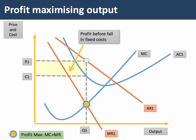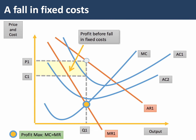Now let's assume there's a fall in the fixed cost of production — for example, a fall in insurance costs or a fall in the cost of renting buildings on an annual leasing basis. Fixed costs fall from AC1 down to AC2. Notice there's no change in marginal cost — a change in fixed costs does not affect marginal cost. So all we see is a fall in AC1 down to AC2.